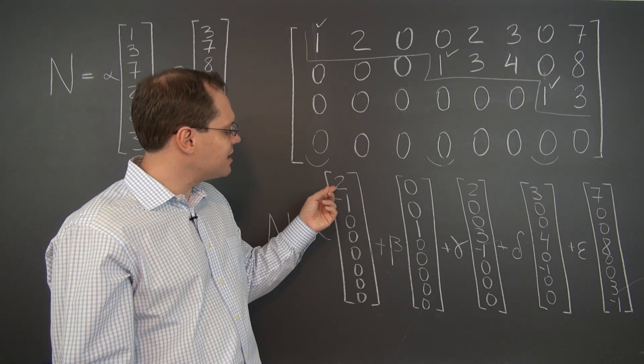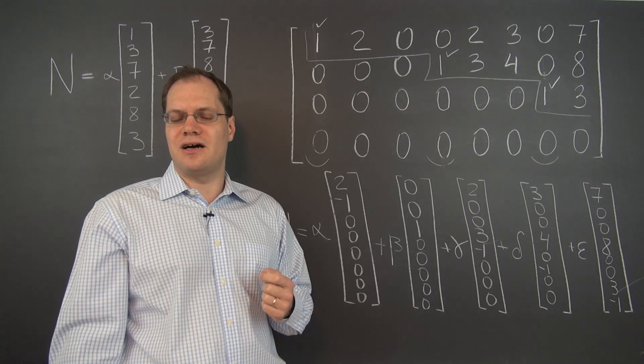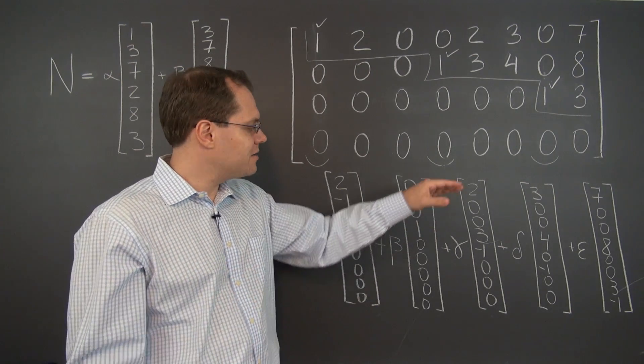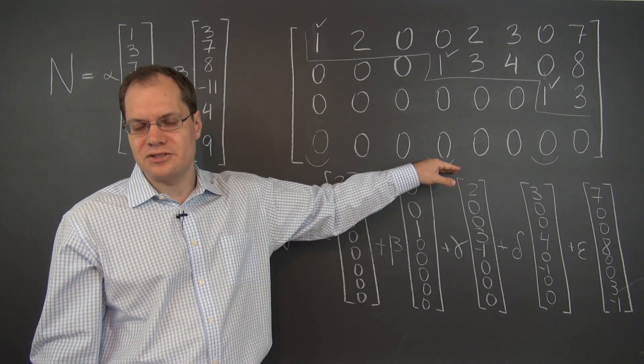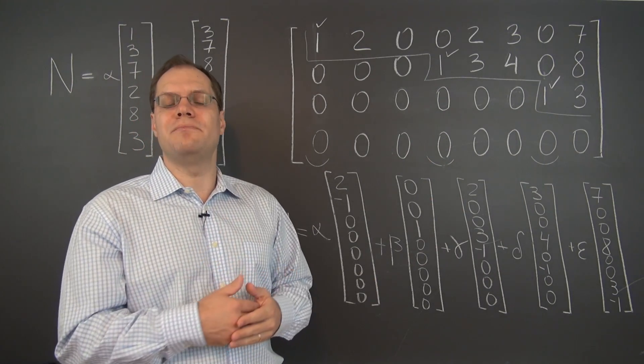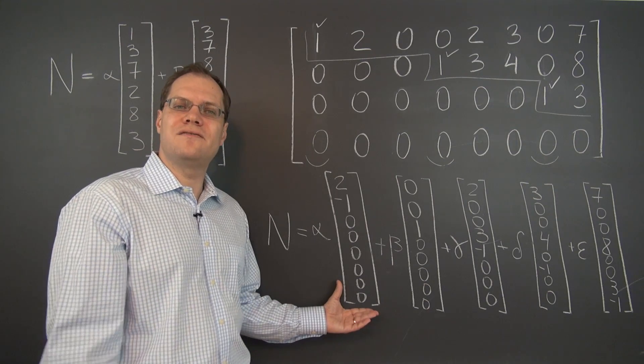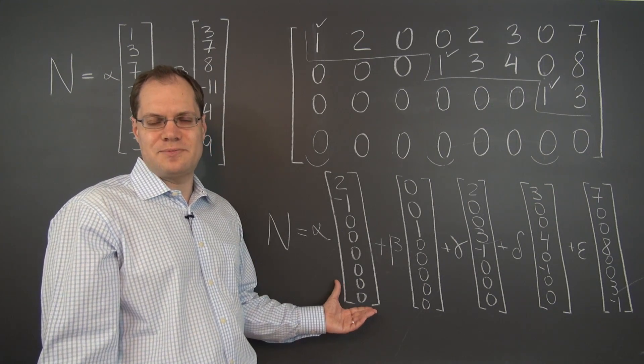And we also know that the second column is twice the first column. So that's a statement that's true not only about the row reduced echelon form of the matrix, but about the original matrix as well.